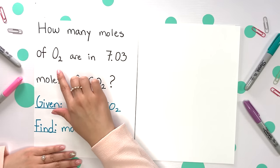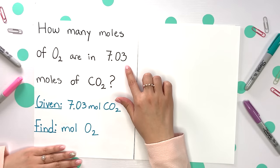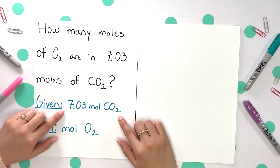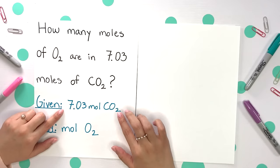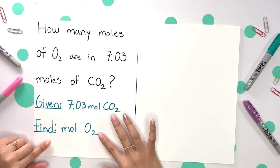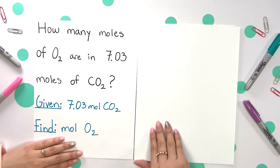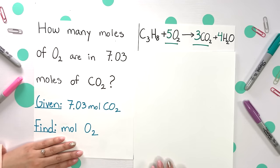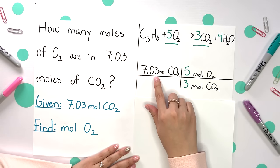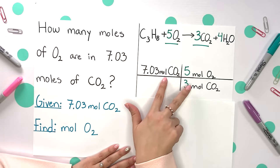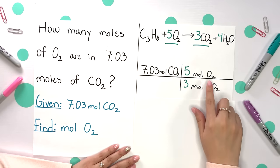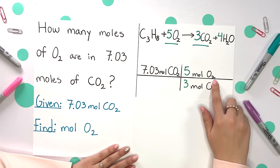How many moles of O2 are in 7.03 moles of CO2? We're given the 7.03 moles of CO2 and going to moles of O2. We're changing the compound again, so we have to use our mole ratio from our balanced equation. You're set up with your given on top, the 7.03 moles of CO2, aligning those moles of CO2 across from each other so they can cancel, and placing the moles of O2 on top.